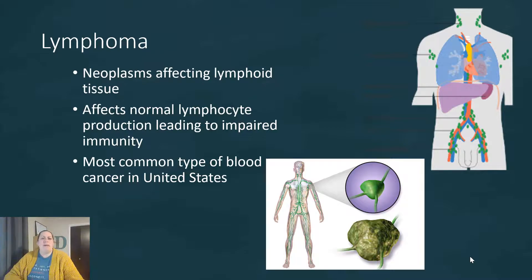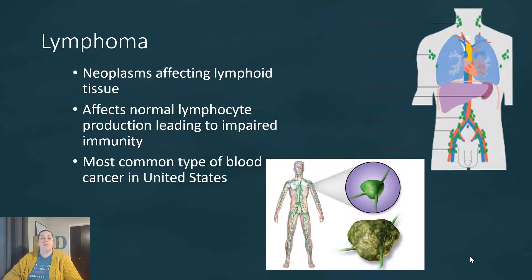We now have lymphoma. Lymphoma is a neoplasm — a cancer that affects the lymphoid tissue and affects the normal lymphocytes. They're not going to do their normal job; their production is impaired, which impairs immunity. We see Hodgkin's lymphoma versus non-Hodgkin's lymphoma. One of the main differences is microscopically looking at a biopsy — if Reed-Sternberg cells are present, that's a type of Hodgkin's lymphoma. This is the most common type of blood cancer in the United States.